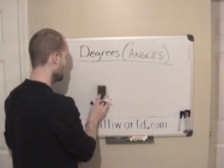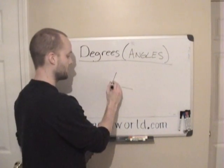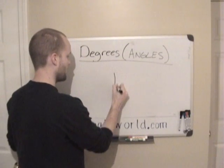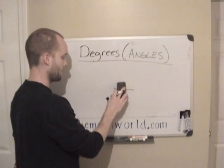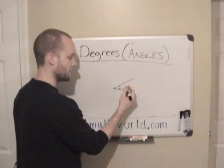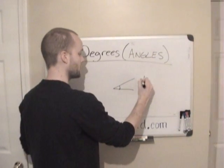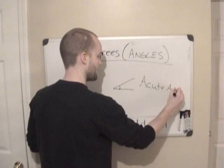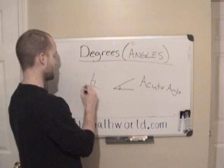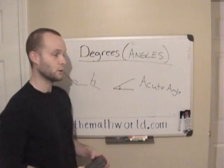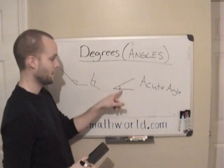The other thing you need to know is the names of different angles. We already went over a right angle, which is 90 degrees. If it's less than 90 degrees — this could be 25 or 30 degrees, it doesn't matter — if it's less than 90 degrees it's called an acute angle. So anytime they ask you to find the acute angle, it's going to be the one that's smaller than 90, so from 0 to 90.